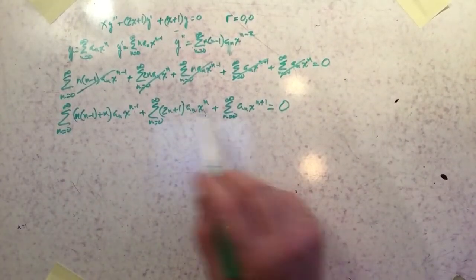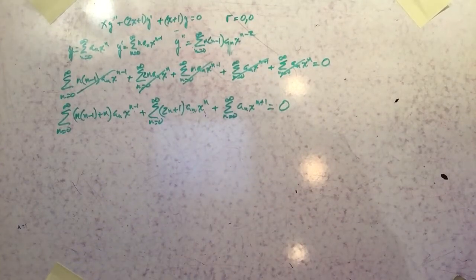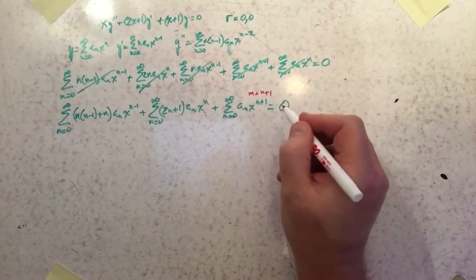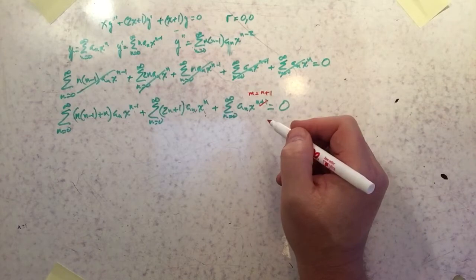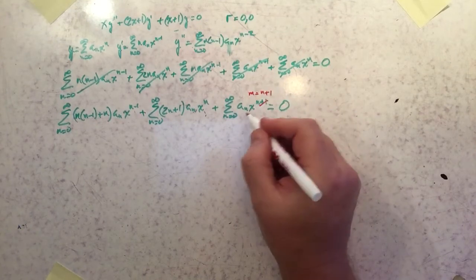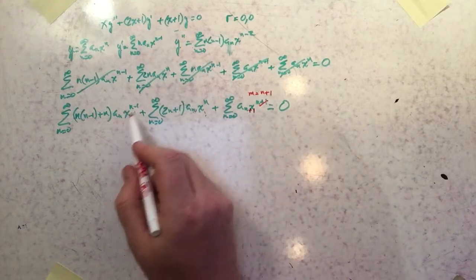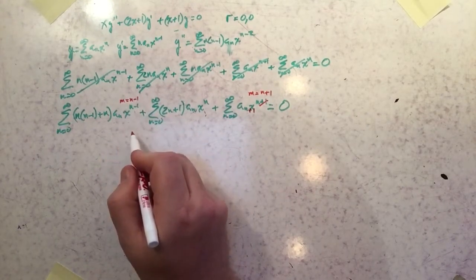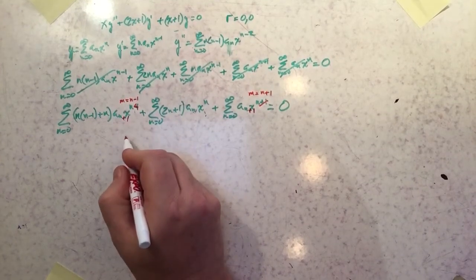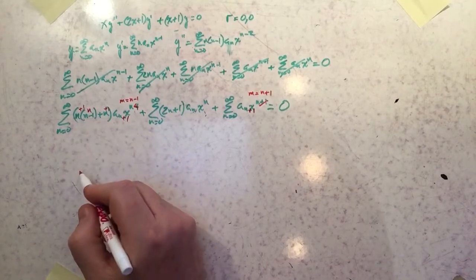Now I'll do an index shift to align all powers to x^n. I'll replace n+1 with m in the x^(n+1) term, making that power just xⁿ, which means replacing all n's with (n+1) — so aₙ becomes aₙ₊₁. For the x^(n−1) term, I set m = n−1, which removes the minus one from the exponent and replaces all n's with (n+1), giving factors of (n+1) and (n+1) in the bracket.